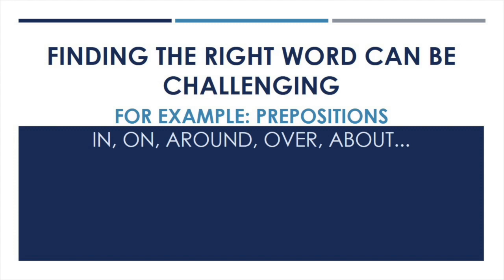Finding the right word can be one of the more difficult parts of writing. One example of a challenging word choice area is choosing prepositions. Prepositions are those little words like in, on, around, and over that we find after many verbs.